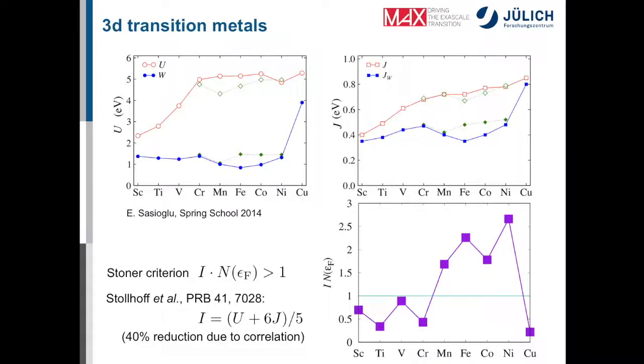Then as an example, here you see some calculation or values of the Hubbard-U parameter that we have calculated for the 3D transition metals from scandium to copper. You see two curves here. The red curve is our calculated Hubbard-U parameter. The blue curve is the corresponding fully screened parameter where we do not eliminate screening processes that happen in the correlated subspace. And you see the corresponding parameter is much smaller because you have more screening. The more screening you have, the smaller the parameter is or the smaller the interaction is.